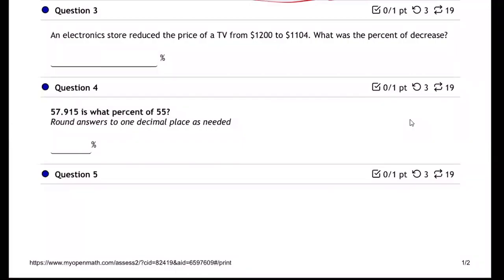Number three. An electronics store reduced the price of a TV from $1200 to $1104. What was the percent of the decrease? Okay, so $1200, the price of the TV...